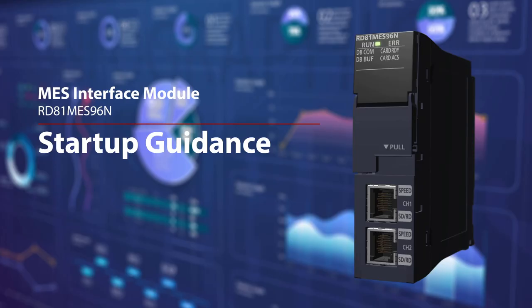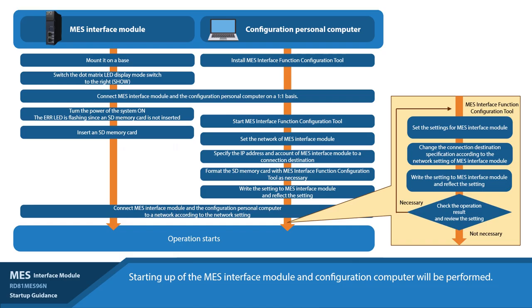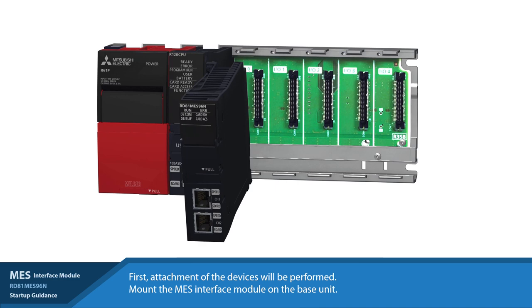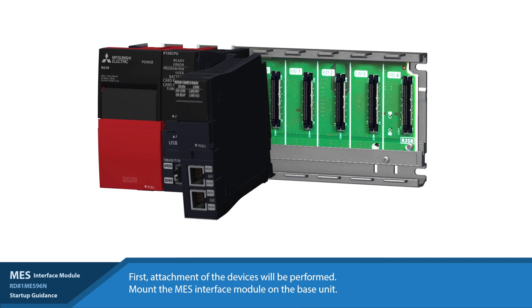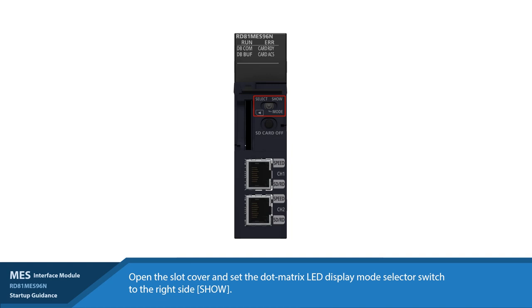Part 4: Start up and configuration of the MES interface module. In this section, we will discuss how to configure your MES interface module to communicate with the server. Before starting this section, please ensure your server is running. First, physically mount the MES interface module to your backplane. Open the slot cover and set the dot matrix LED display mode selector switch to the right side. Next, launch GXWorks3 on the configuration computer.